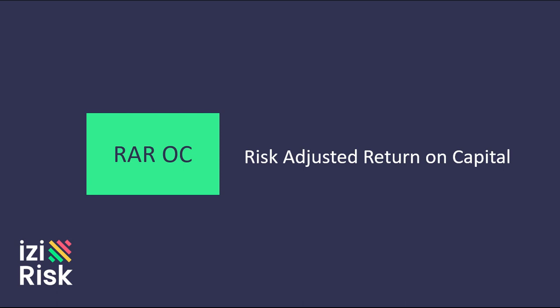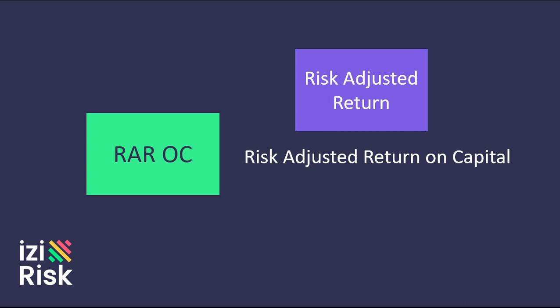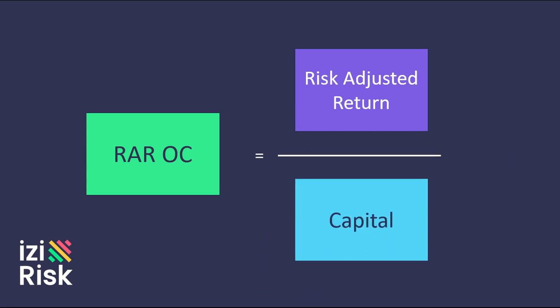RAROC stands for risk-adjusted return on capital. It is calculated by dividing the return, considering a risk adjustment in the numerator, by the capital or committed equity in the denominator.